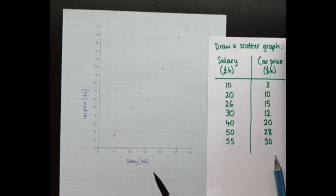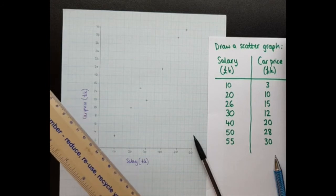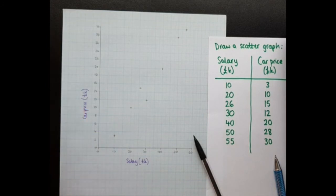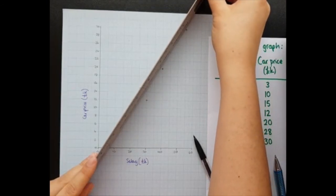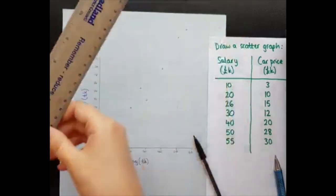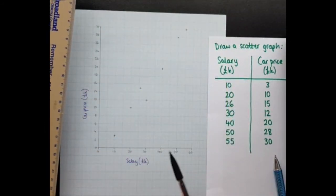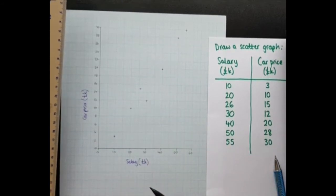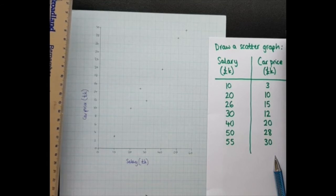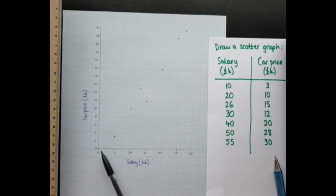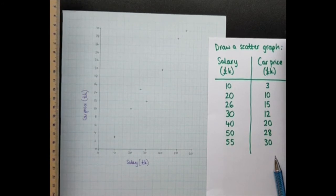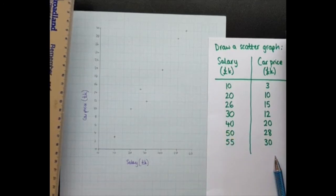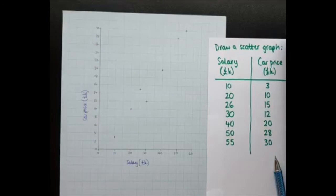So now what I want to do is I want to draw a line of best fit through these points. This is much easier if you have a see-through ruler. Now you can see that I don't. I've got this ancient, very un-see-through ruler. So what I like to do is I like to put the ruler on its side to try and do the line of best fit so I can then see straight down. Now the idea with the line of best fit is we want to have roughly the same number of points above the line as below it. So that is our aim. We do not need to join up the first and last points. We do not need to go through the origin which is the zero zero point.